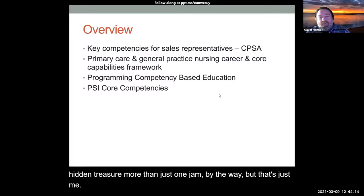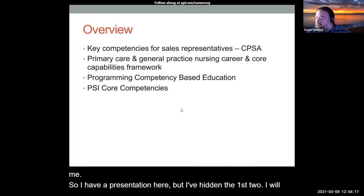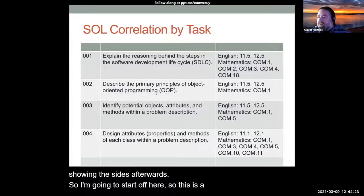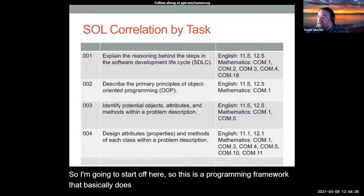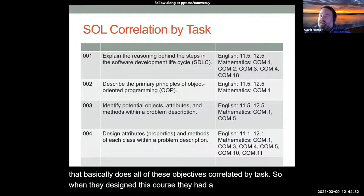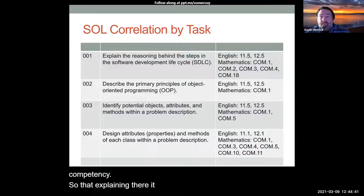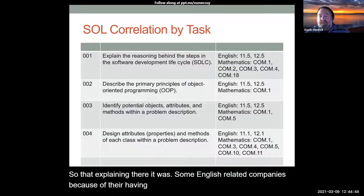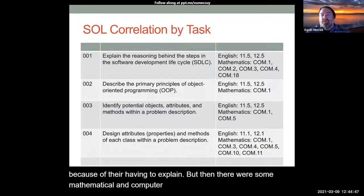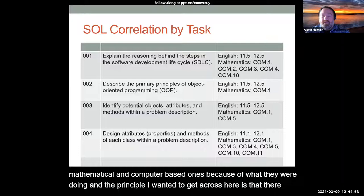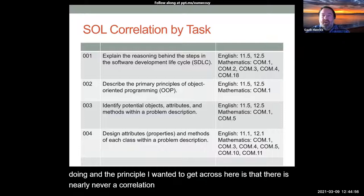I have a presentation here, but I've hidden the first two slides. I will be sharing the slides afterwards. So this is a programming framework that basically does all of these objectives correlated by tasks. When they designed this course, they had a whole competency framework, and each task was correlated against individual competencies. There were some English-related competencies because of having to explain, but then there were some mathematical and computer-based ones because of what they were doing. The principle I wanted to get across is that there's nearly never a one-to-one correlation between a competency and an activity or a task.